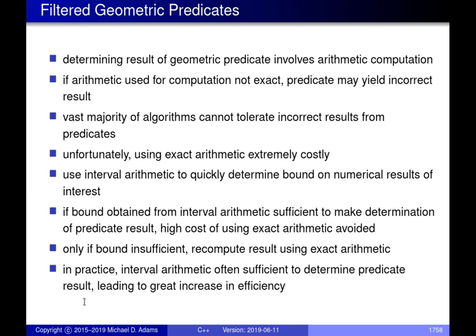The most straightforward way to ensure correct predicates is exact arithmetic — compute the exact answer as you would with pen and paper, carrying all digits and never rounding. However, this is very expensive: each additional computation causes the memory required to represent the number to grow without bound, making it very slow and potentially exhausting memory.